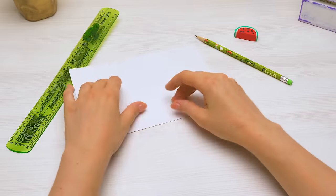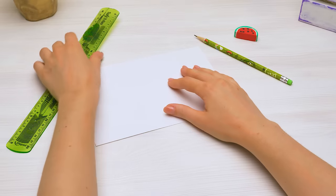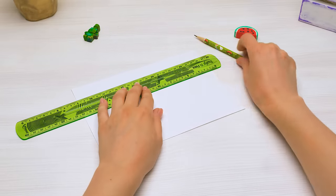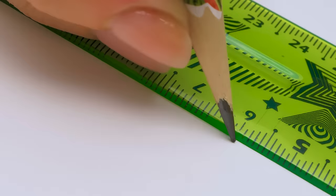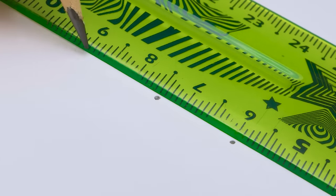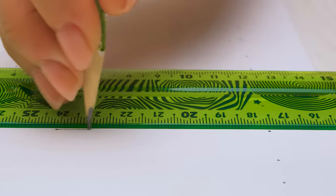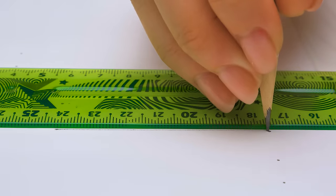If the last technique seemed too simple for you, let's try making something more complicated. We'll need a ruler and precise calculations again. I think it's better to draw dots first and then add the lines. Everything should be neat and symmetrical.